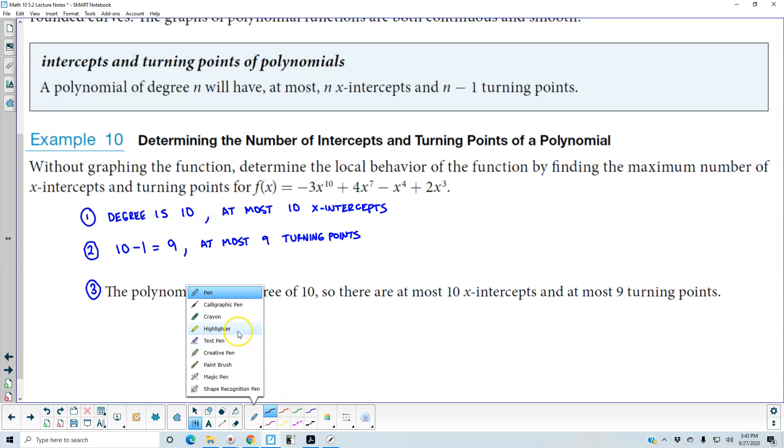So the first thing we need to do is identify the degree. The degree is 10. So since the degree is 10, that's going to tell us that we have at most 10 x-intercepts. Now we're going to take that 10 and we're going to subtract 1 to get 9, and we're subtracting that to tell us how many turning points there are. So there's going to be at most 9 turning points.